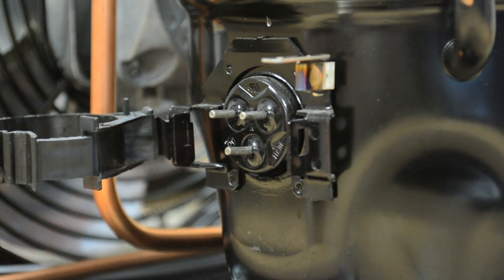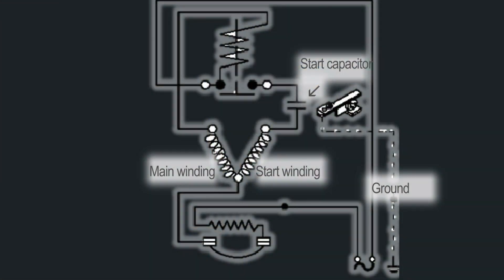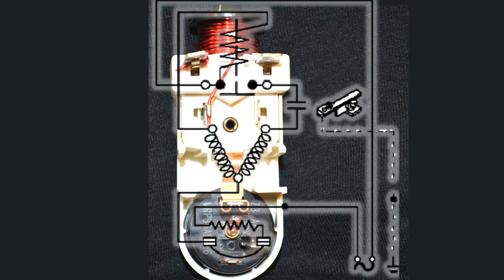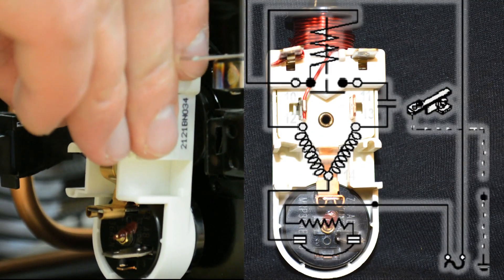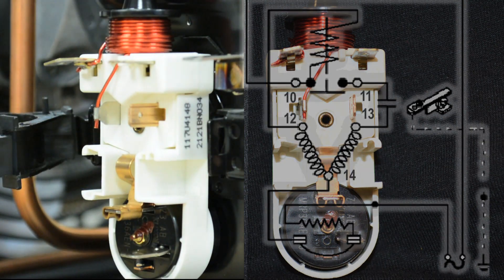With the pins properly identified we will be able to understand the wiring diagram. A current relay such as this one has normally open contacts that close due to the inrush of current when the compressor starts. Once the initial inrush of current passes, the current relay contacts reopen to their normal position, which de-energizes the start winding and removes the start capacitor from the circuit.